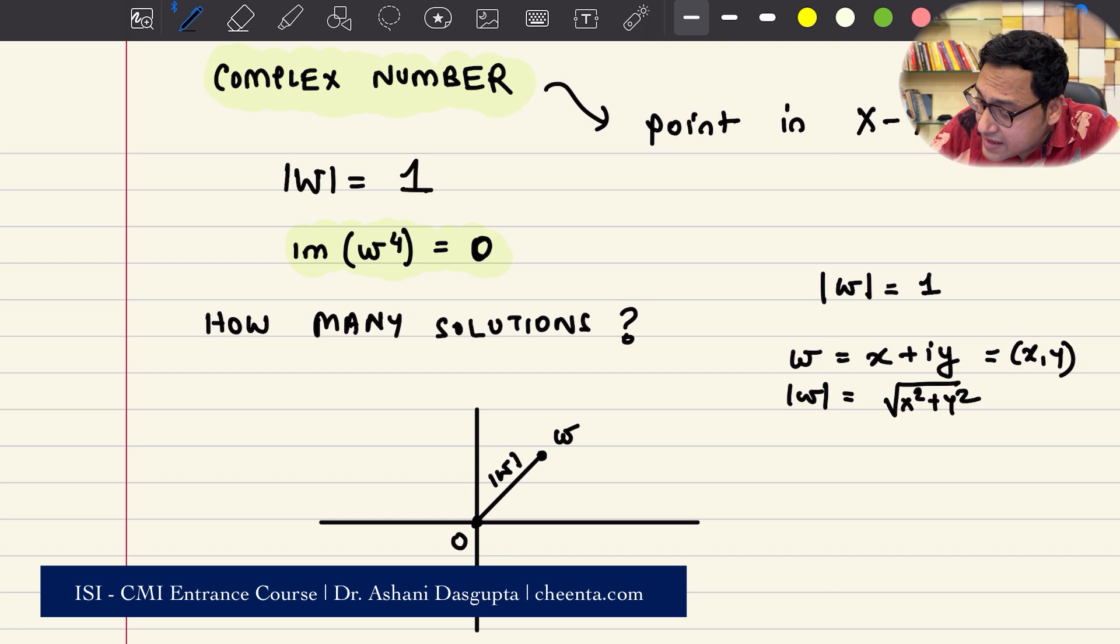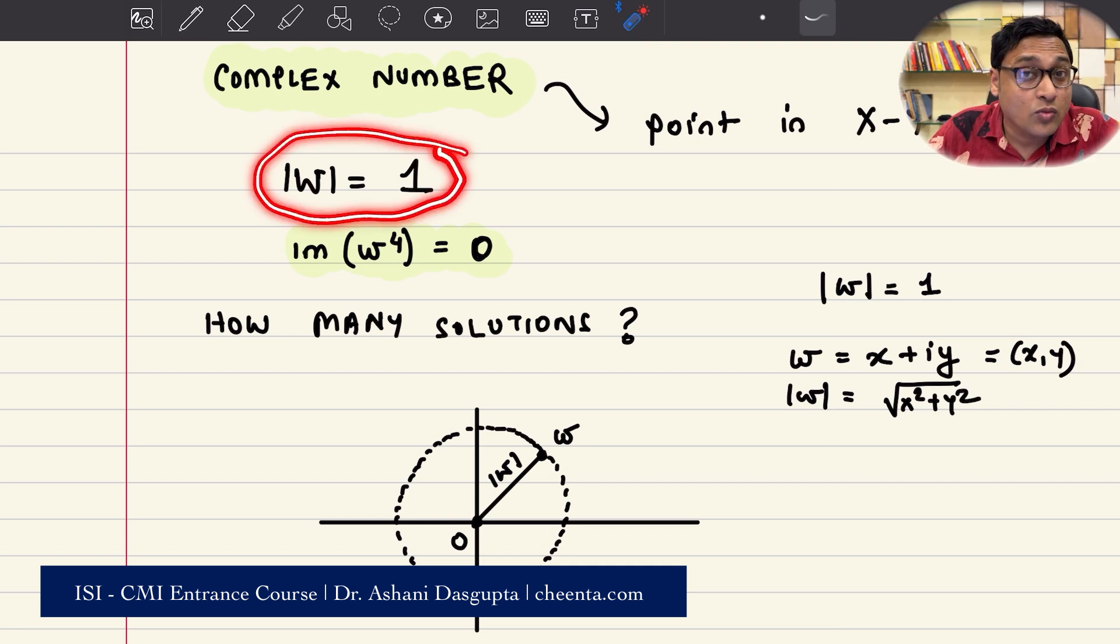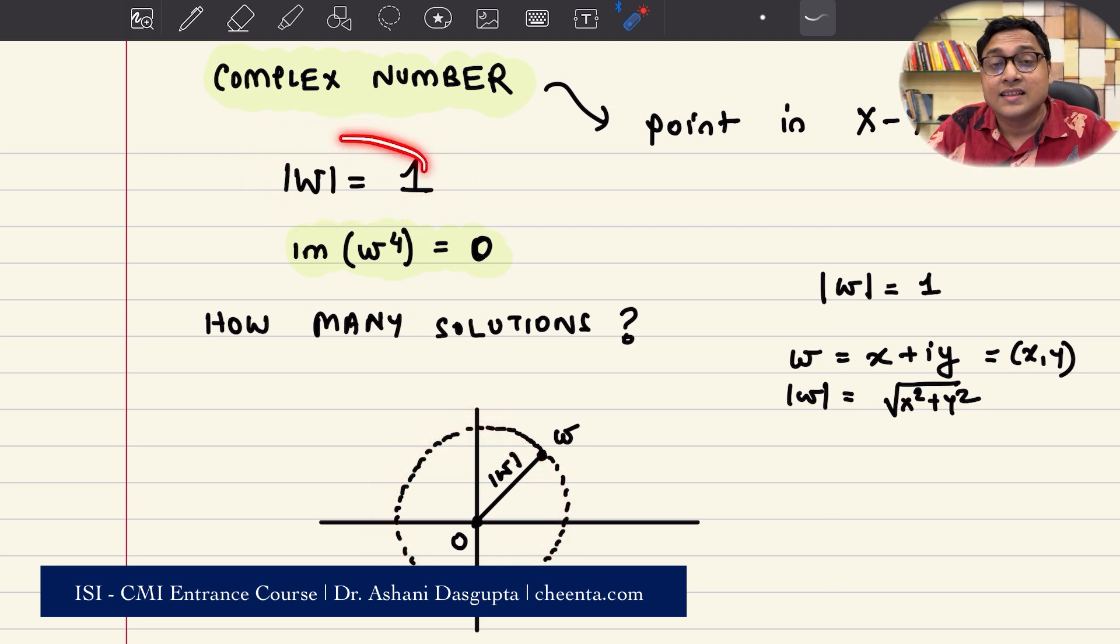Absolute value of omega equals to 1 means that omega actually constitutes of all those points which are exactly one unit away from the origin. What is the collection of all points which are exactly one unit away from the origin? Well, you're right. Those are only the points on a circle, a unit circle about the origin. So the first equation, absolute value of omega equals to 1, has infinitely many solutions. And those are all points on this unit circle. They all satisfy this one condition.